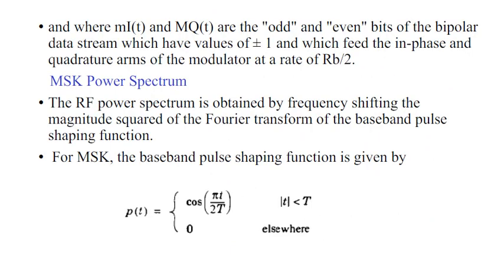MI(T) and MQ(T) are the odd and even bits of the bipolar data stream, which have values of plus or minus 1. These feed the in-phase and quadrature arms of the modulator at a rate of Rb divided by 2.